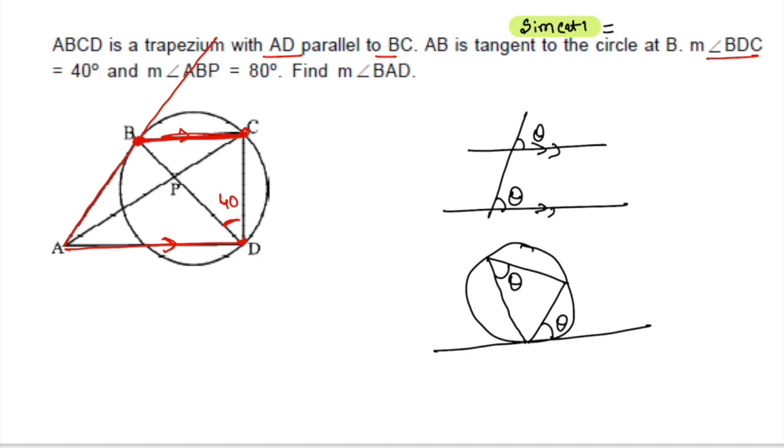So by the tangent-secant, BC making 40, then this angle is 40. Is it okay? So we can say the angle BC upper is 40.